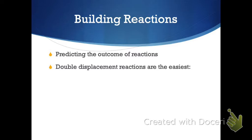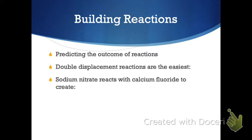In order to be good at building and balancing reactions, we have to be able to build correct chemical formulas. It's going to be all ionic formulas, so that's where we do the crisscross — we get them nice and balanced and neutral, and then we put them into our chemical reaction. The first example: sodium nitrate reacts with calcium fluoride.